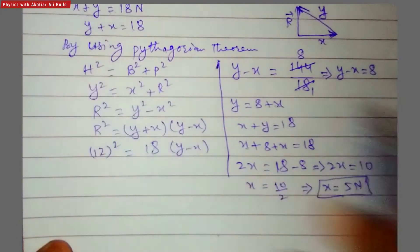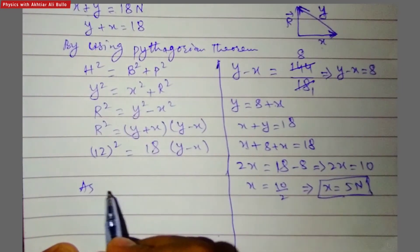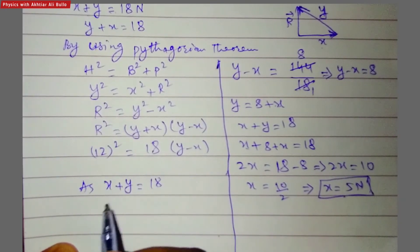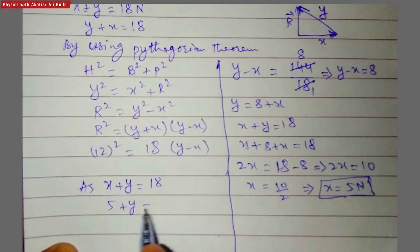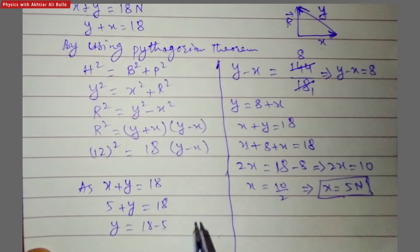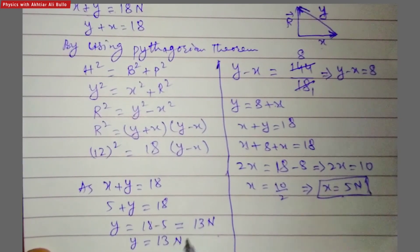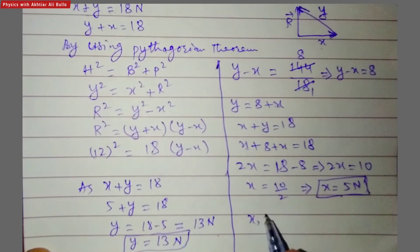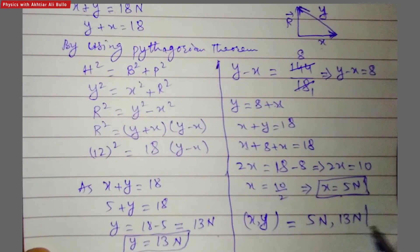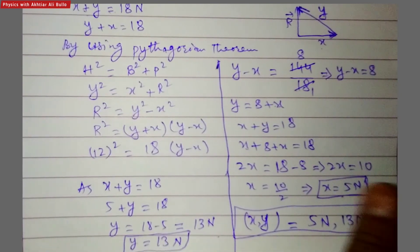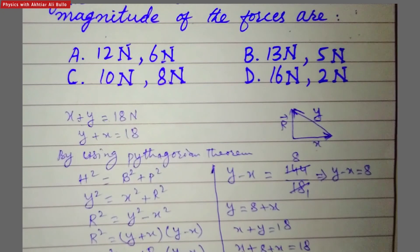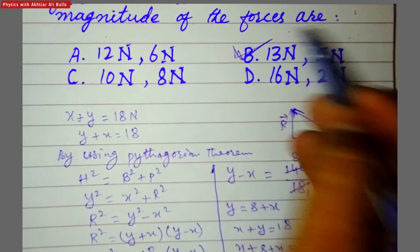Substituting x equals 5 into x plus y equals 18 gives 5 plus y equals 18, so y equals 13 newton. Therefore x and y are obtained as 5 newton and 13 newton respectively. The correct option is B: 13 newton and 5 newton. Thank you.